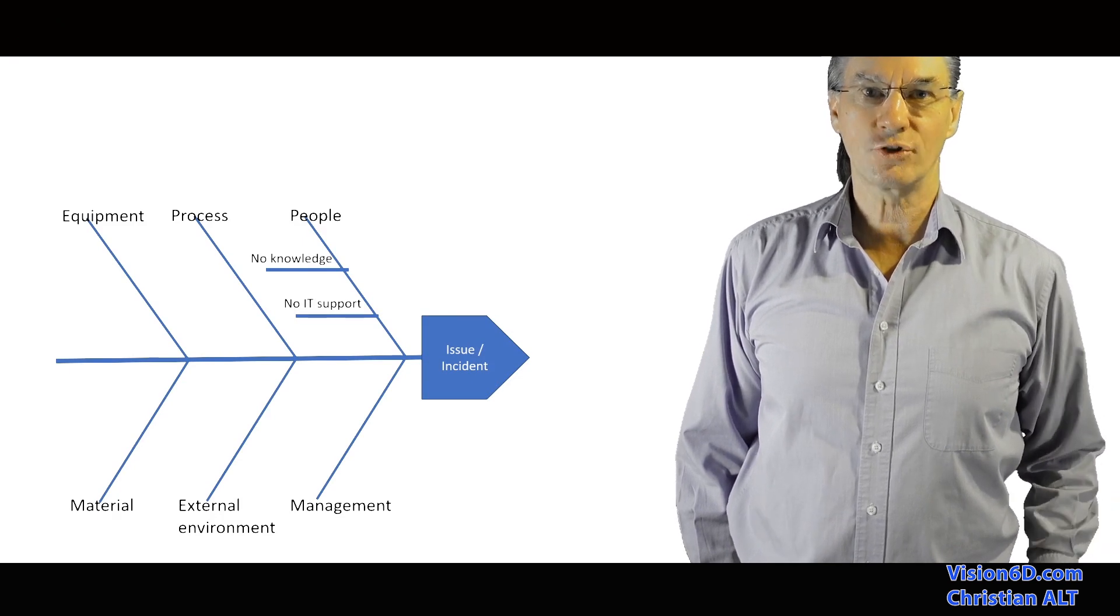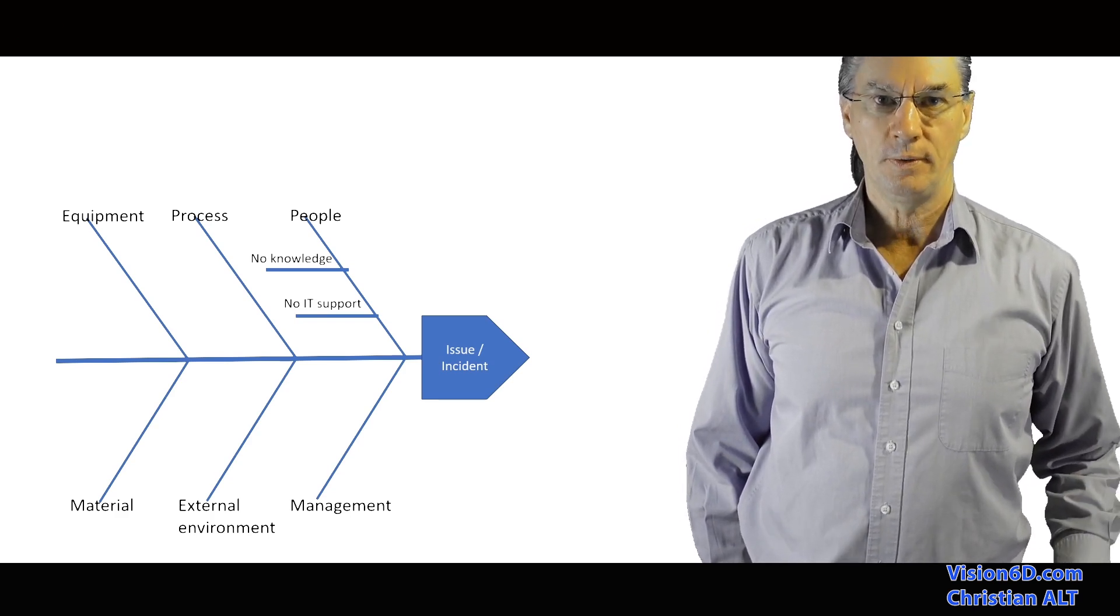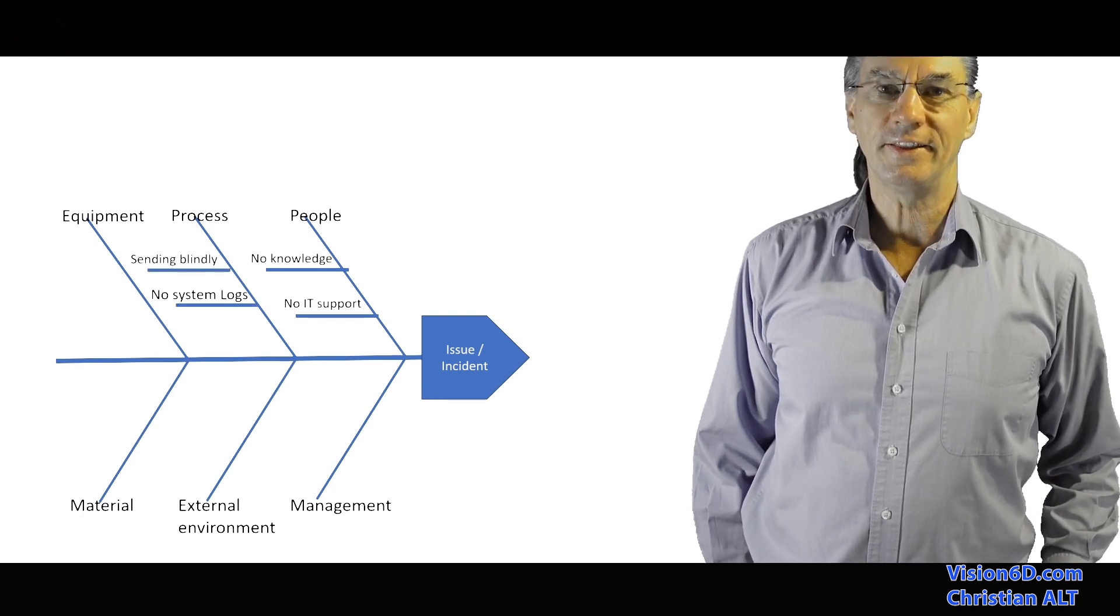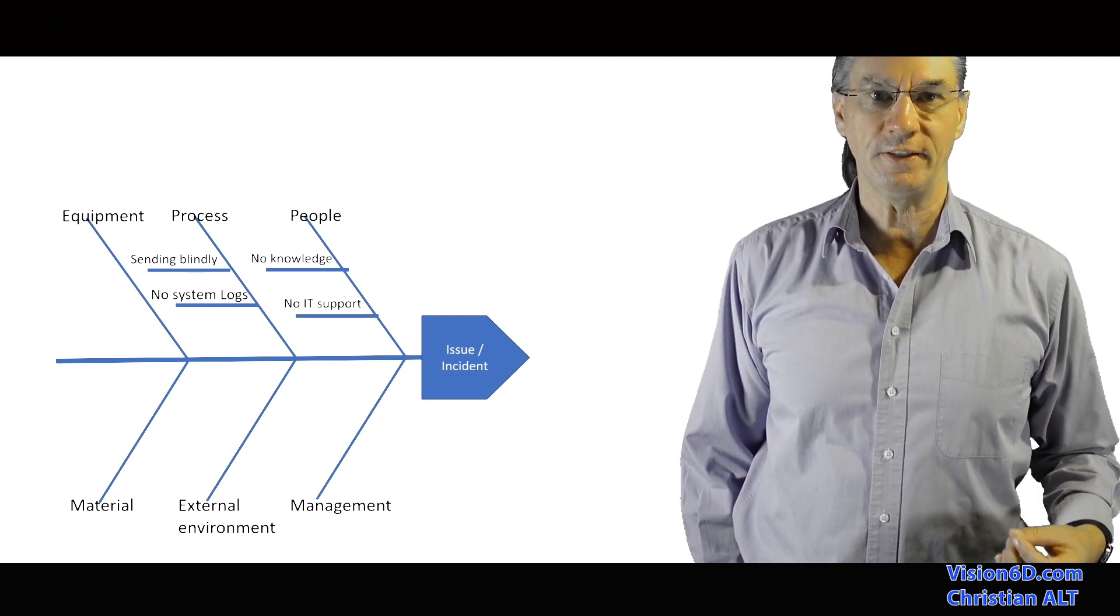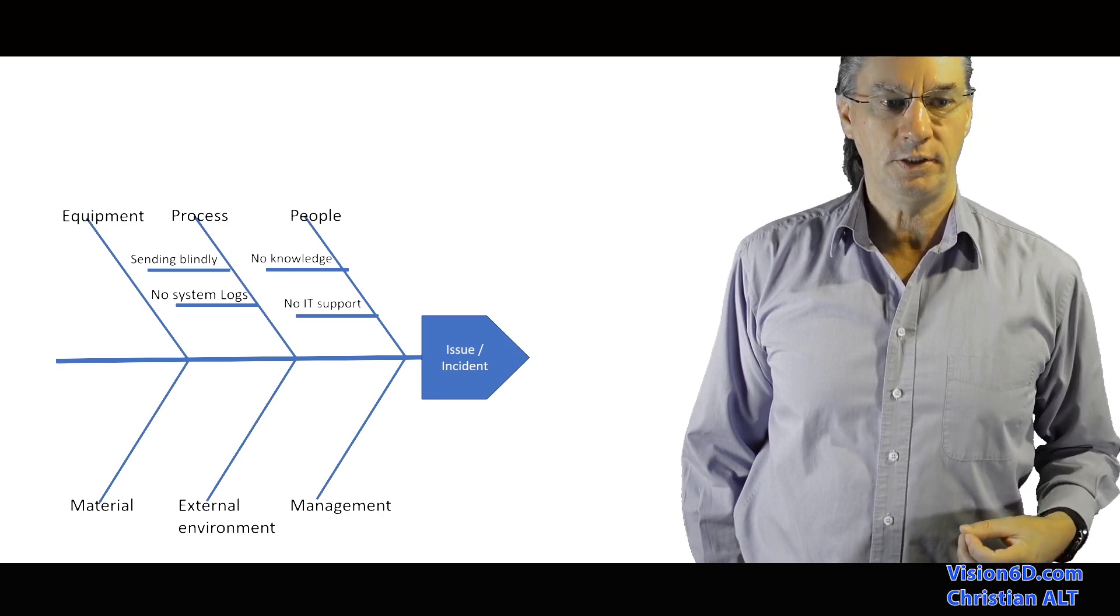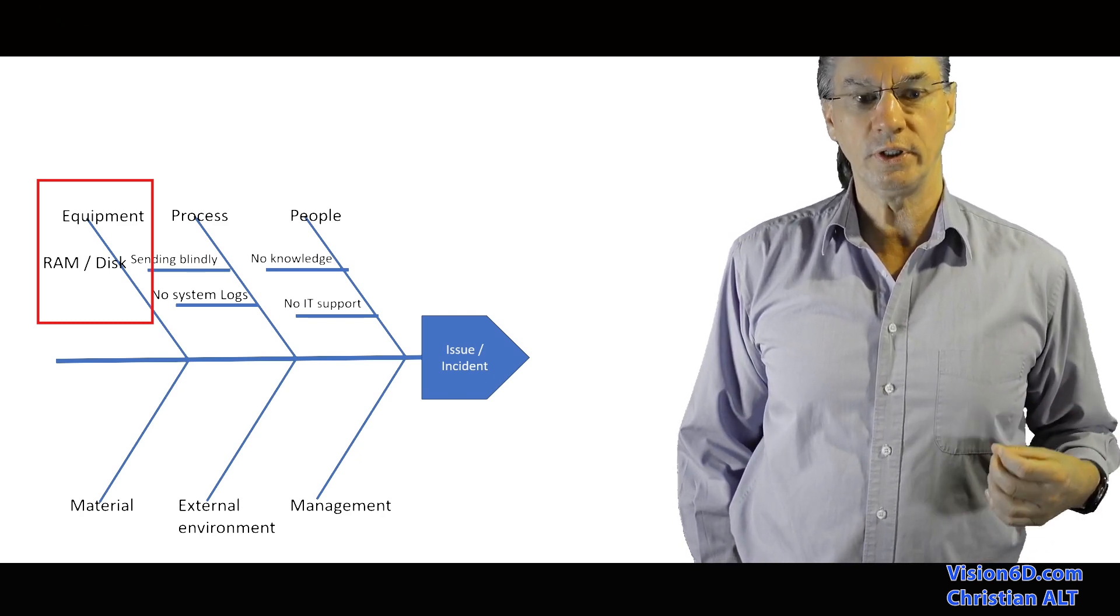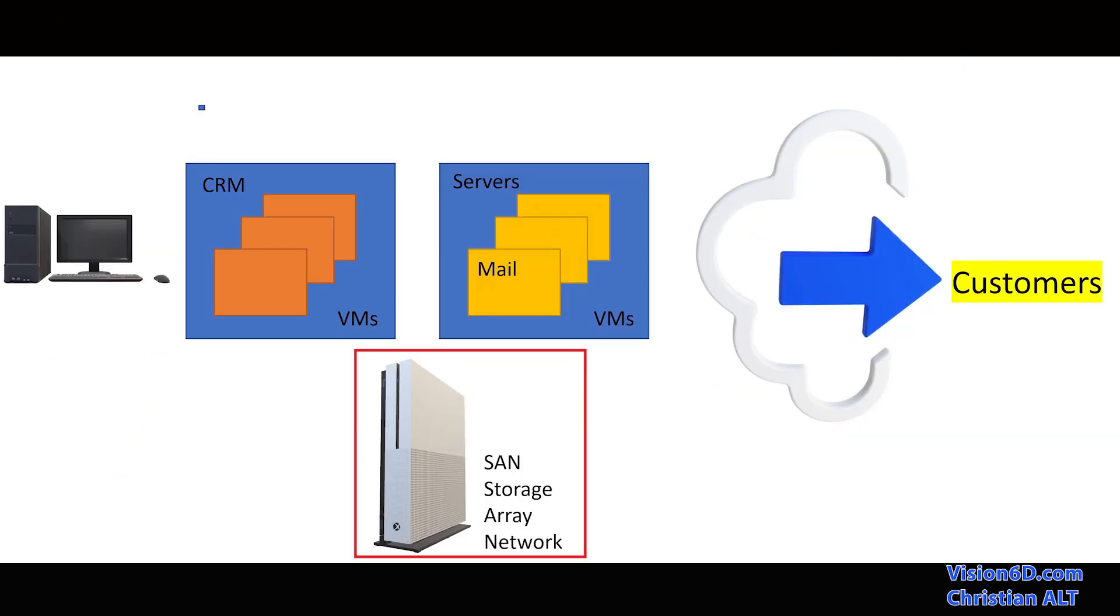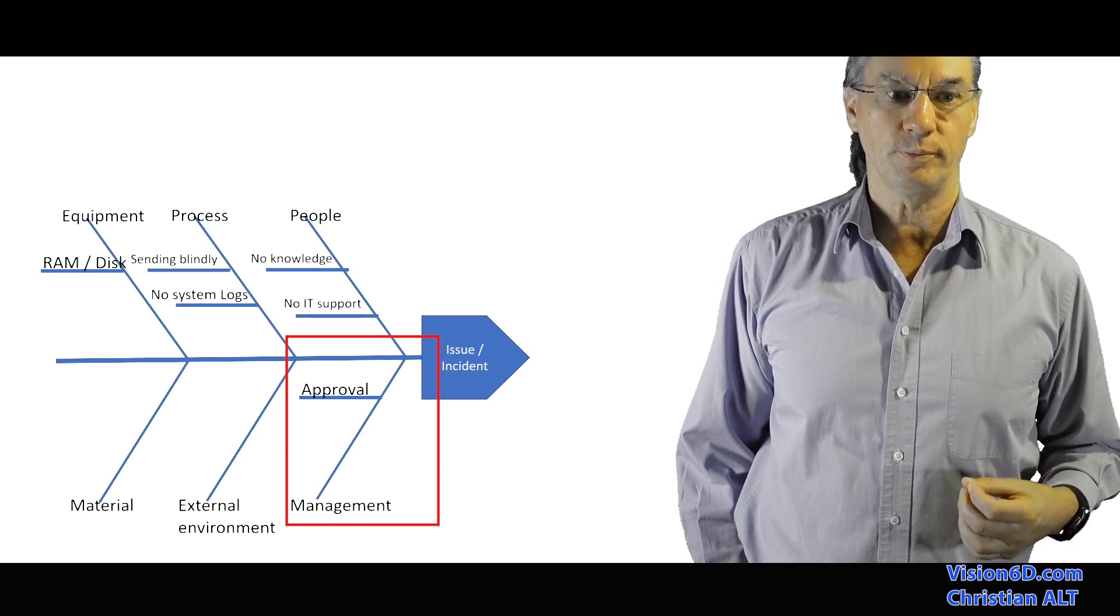So the outcome of the discussion with the team was first to discuss whether we were lacking some knowledges. But this wasn't the case. Then we discussed the process. And it's true that for the marketing people, they were sending blindly. And there were no logs available at the IT. One thing that we found out was a shortening in disk space. And this was really the issue. We knew that we had already some issues ongoing with the SAN storage. And for this, we had a new proposal. And it was lacking approval at that moment by the department manager, the IT department manager.